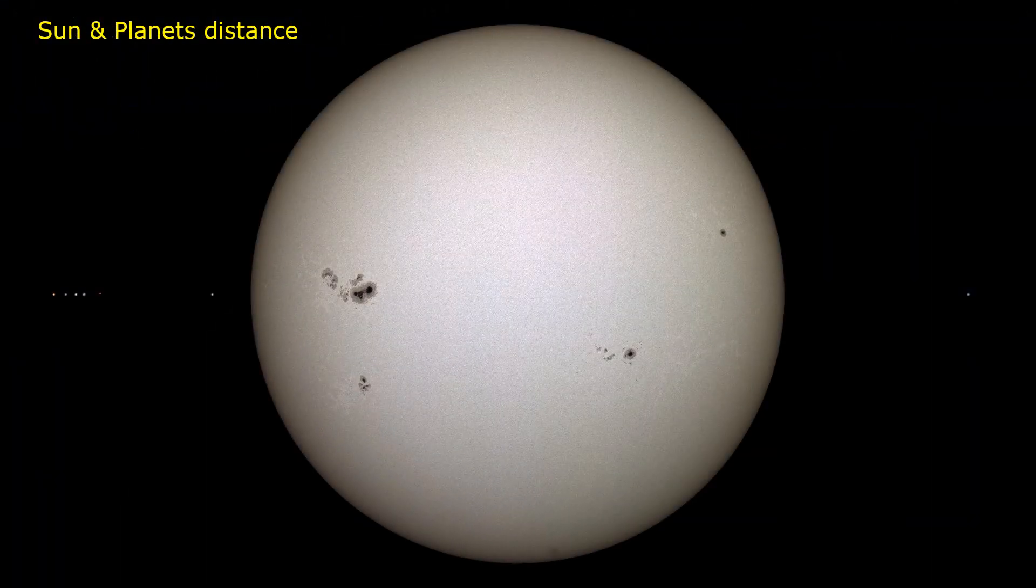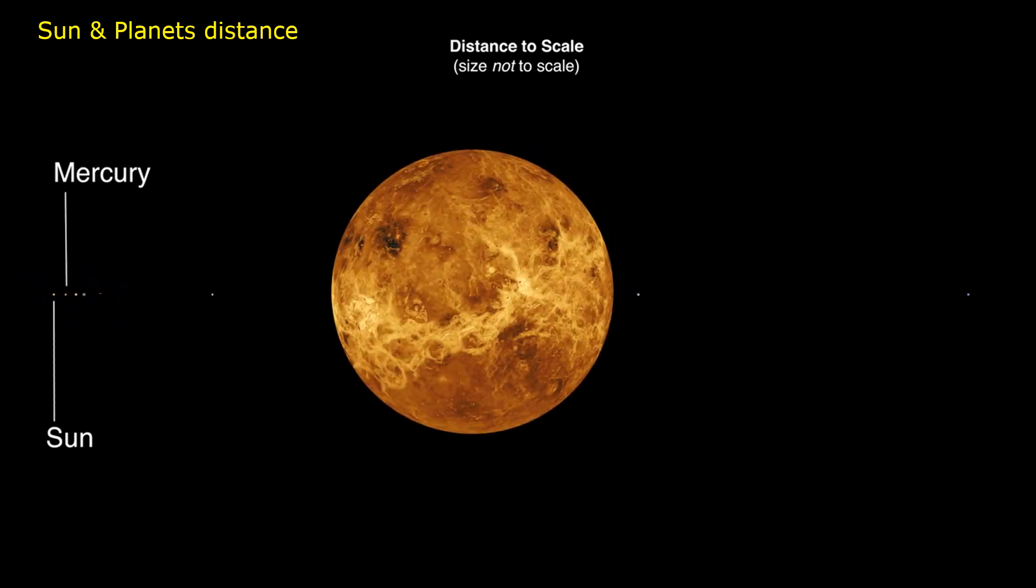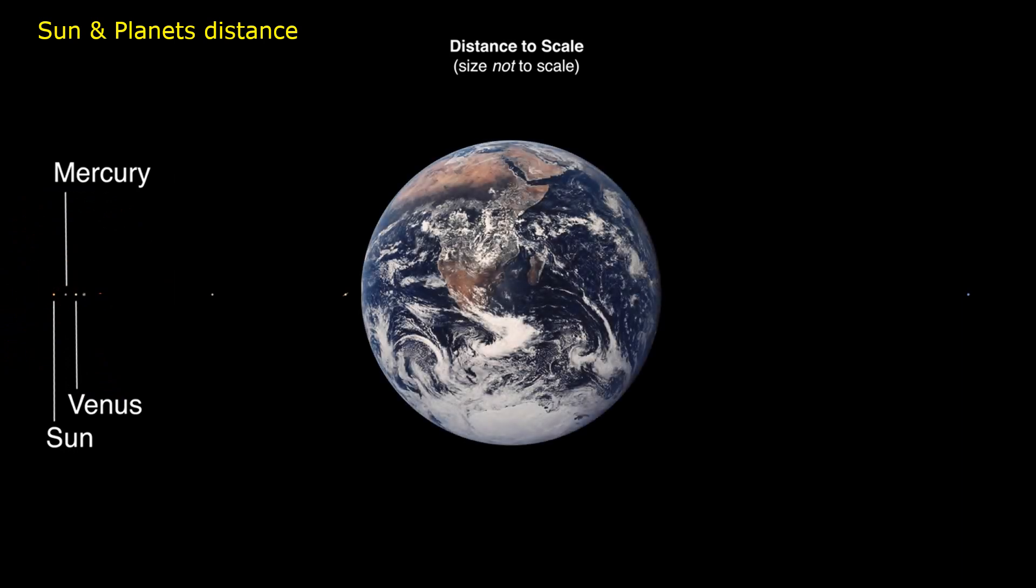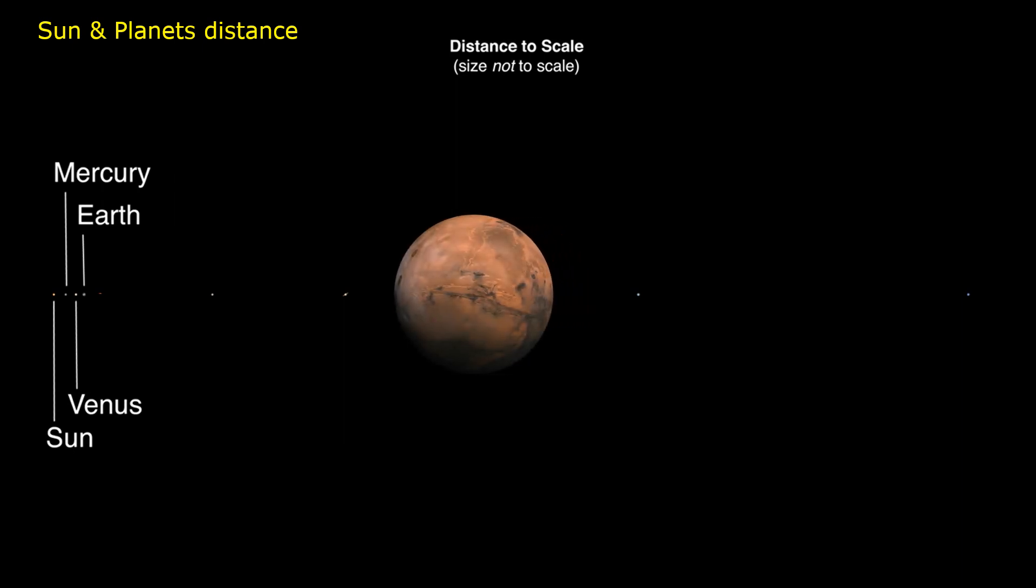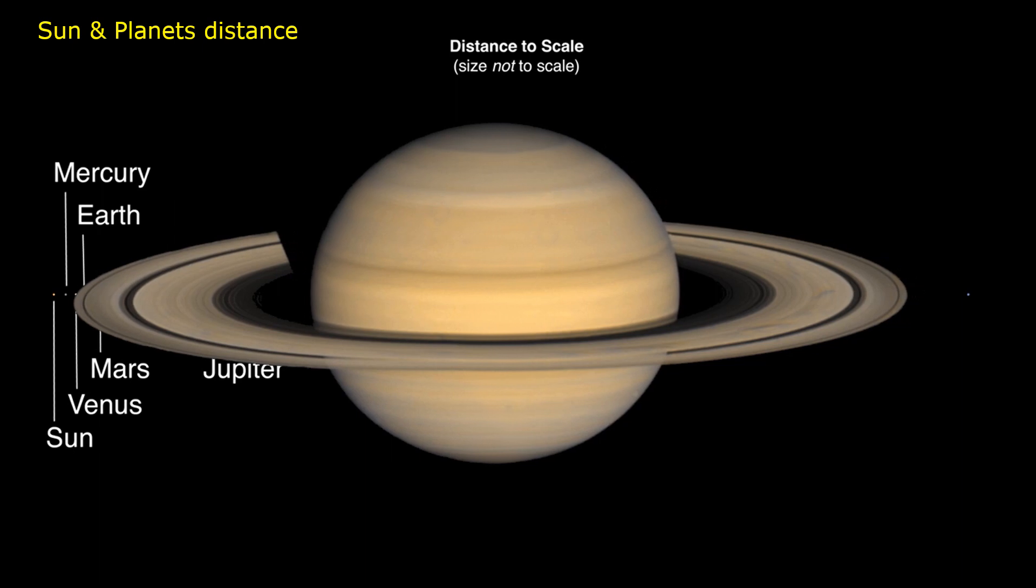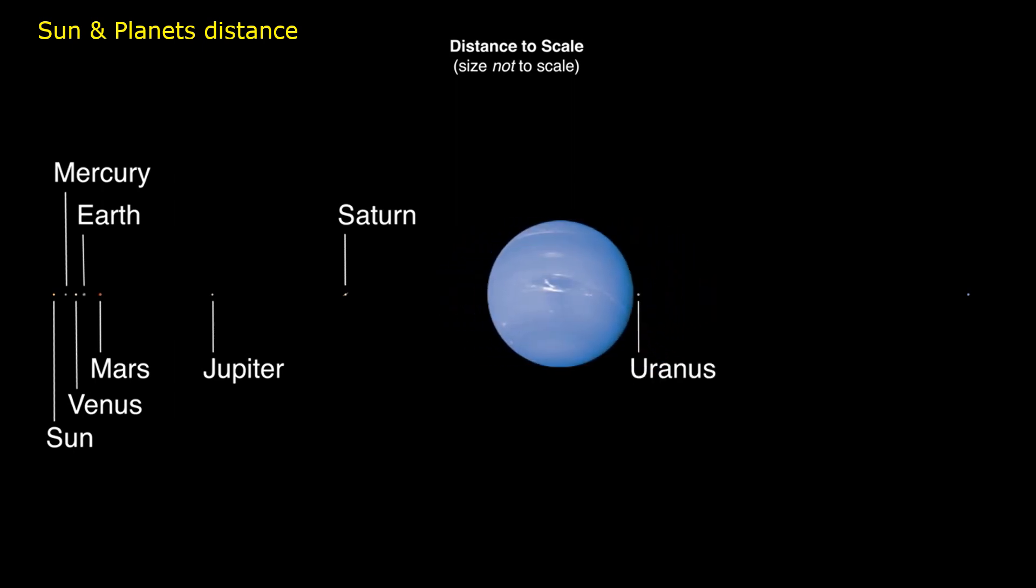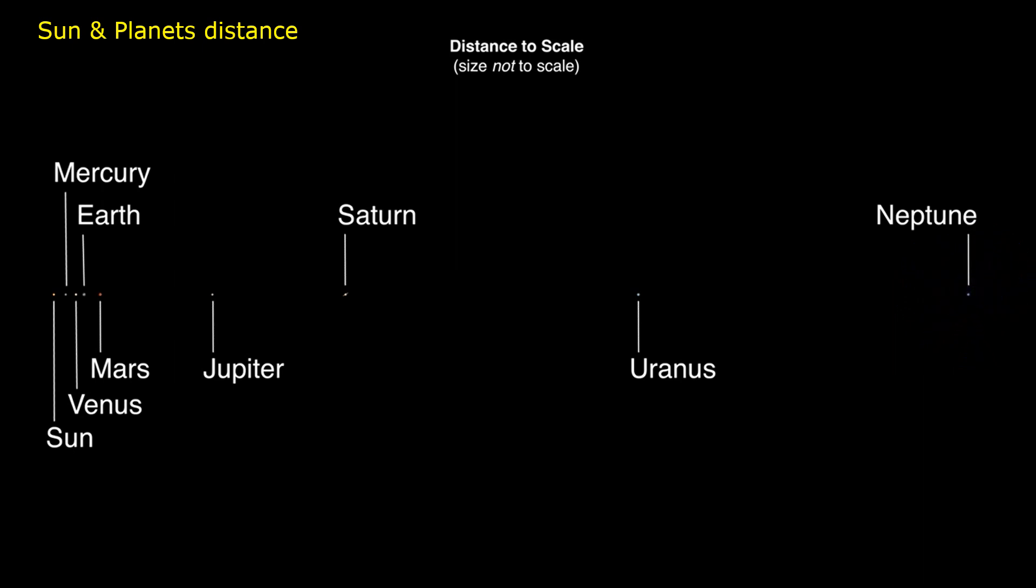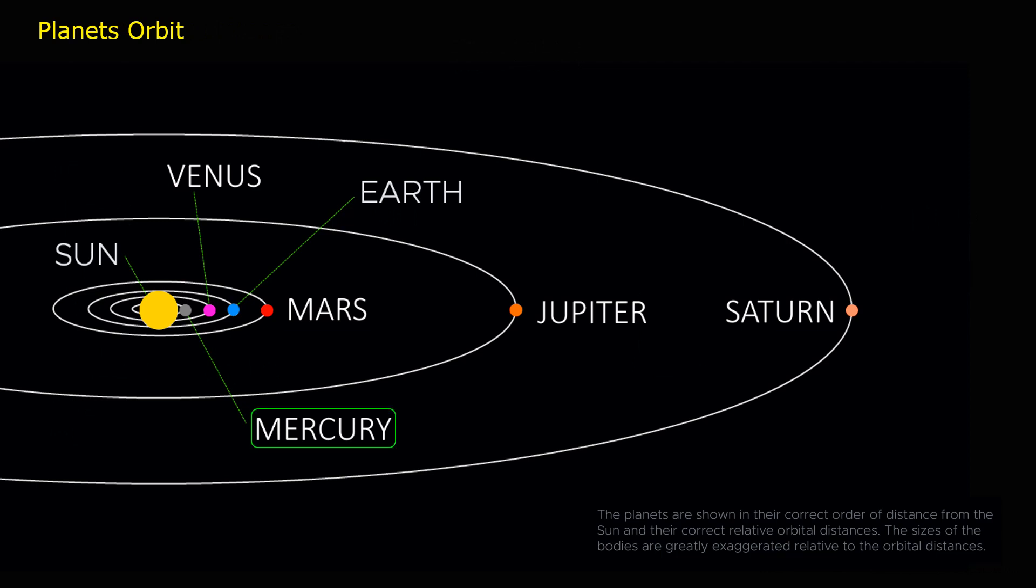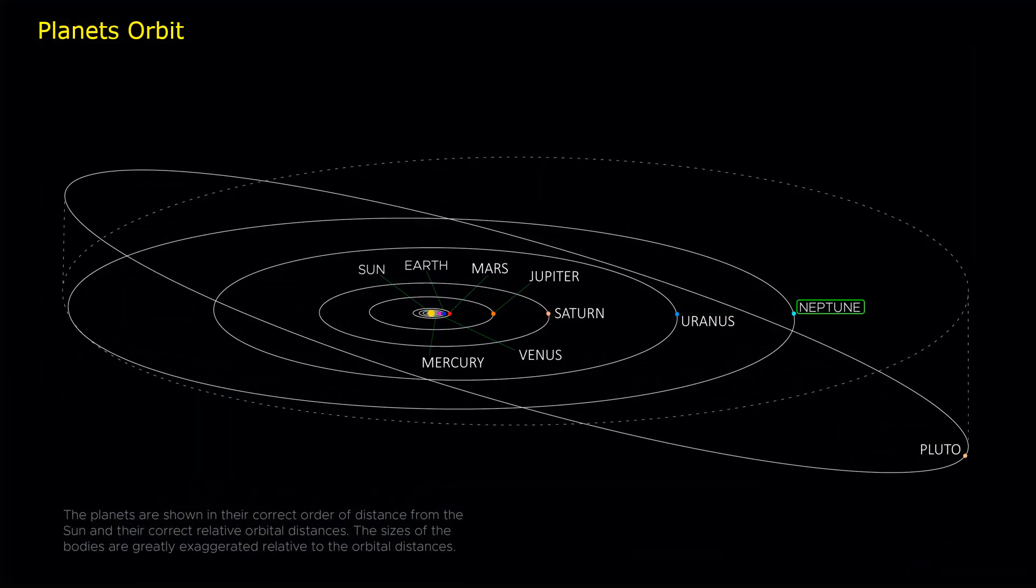Sun and planets distance from sun: Mercury, Venus, Earth, Mars, Jupiter, Saturn, Uranus, Neptune, Pluto.